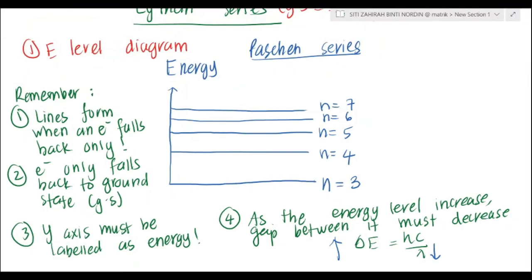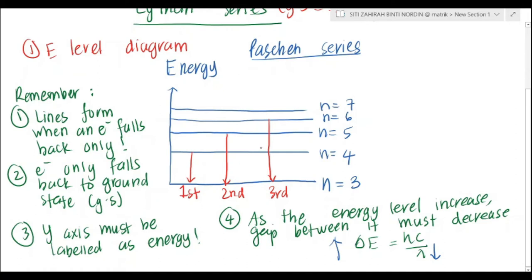For the Paschen series energy level diagram: the first transition is from the 4th energy level to the 3rd energy level, the second transition is from n=5 to n=3, and the third transition is from n=6 to n=3. That is how you draw the energy level diagram.